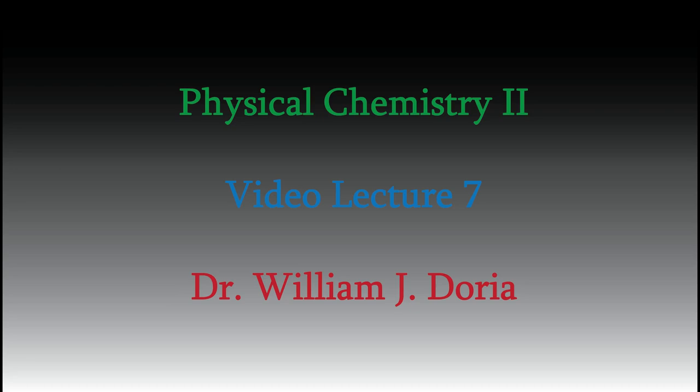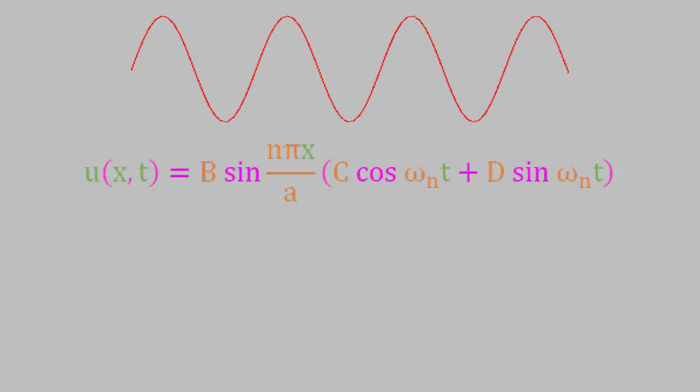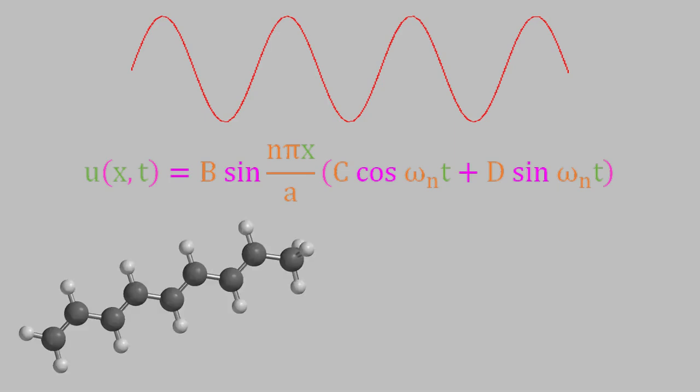Hi, and welcome again to my series of videos for Physical Chemistry 2. When we last met, we dug into the mathematics behind wave equations, and we discovered that a moving one-dimensional wave has this equation. But that was the equation for a general kind of moving wave. Today, I want to show you how we can apply this specifically to wave functions, and we'll see right away that we can get some real practical information about actual chemical systems.